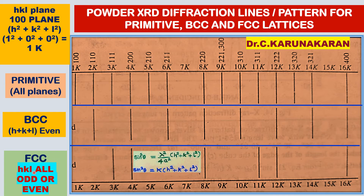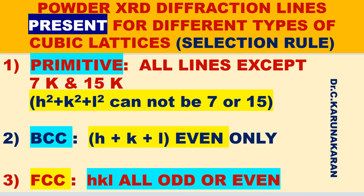For FCC lattice, the selection rule for diffraction lines is that HKL values must be all odd or all even. To summarize the selection rules for different types of lattices observed in powder XRD: for primitive lattice, all lines are present except 7K and 15K — that is, h² + k² + l² will not equal 7 or 15.